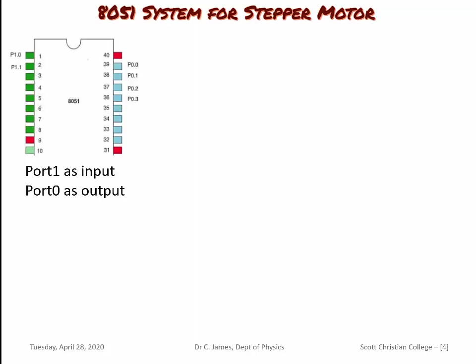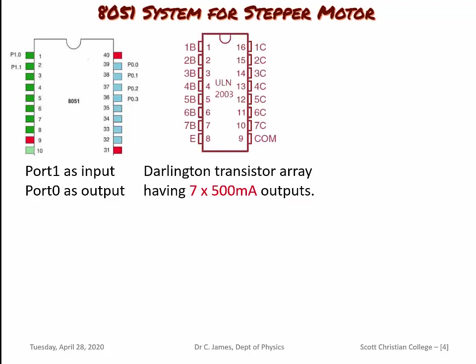The 8051 microcontroller has four ports; we use only two. Port 1 is used as the input port and Port 0 as the output port. In the input port, we use only two pins: one for clockwise movement and the other for anti-clockwise movement. Port 0 as output uses four pins — P0.0, P0.1, P0.2, and P0.3. These four pins are connected to the field coils or phases of the motor through an IC called ULN-2003, which provides the required current to energize the field coils, since the current produced by the microcontroller alone is inadequate.